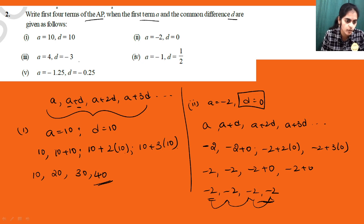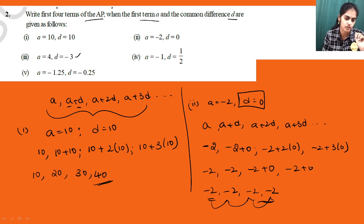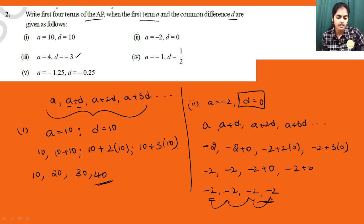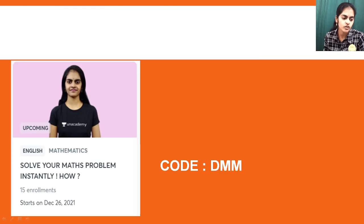Let me also do the third problem and give you one more important conclusion. First conclusion: when common difference is 0, all terms of the AP are the same.